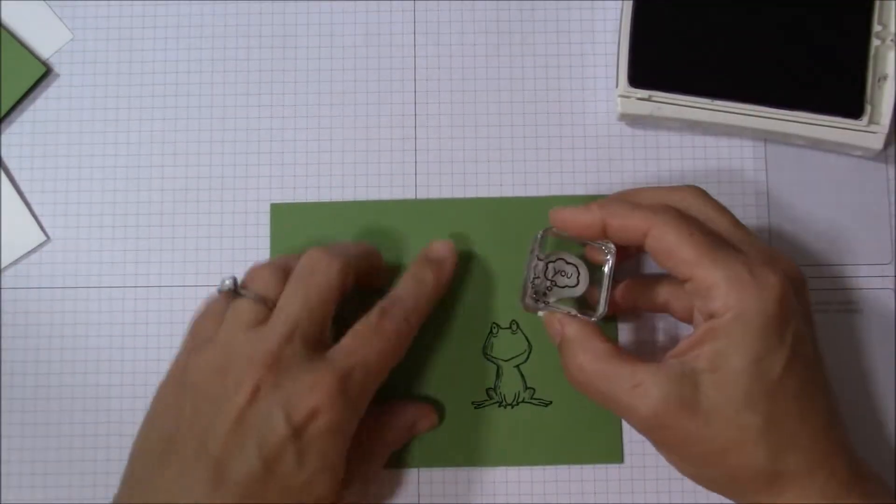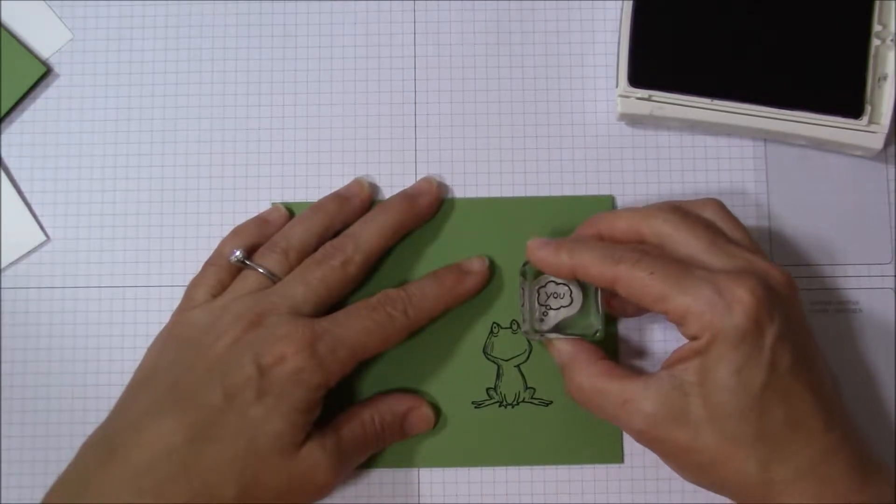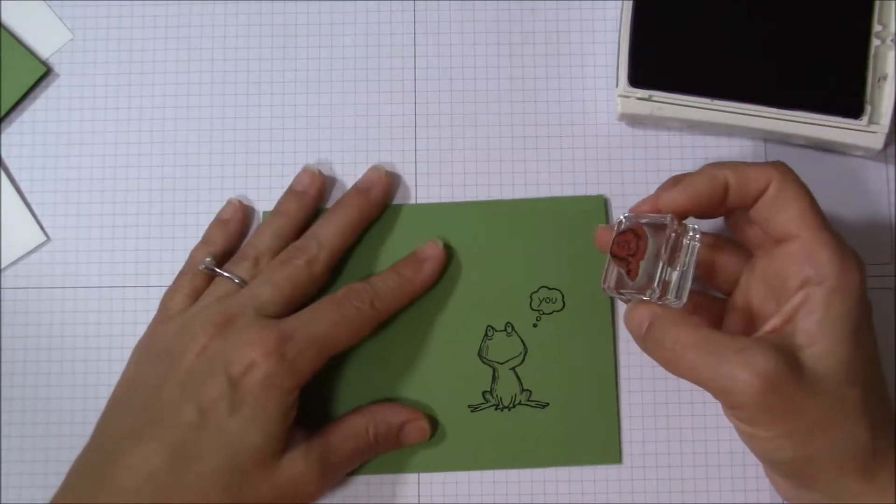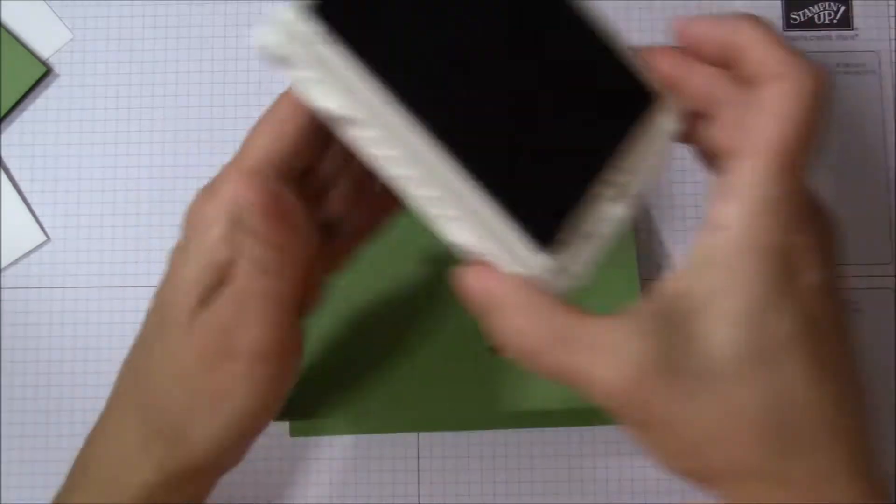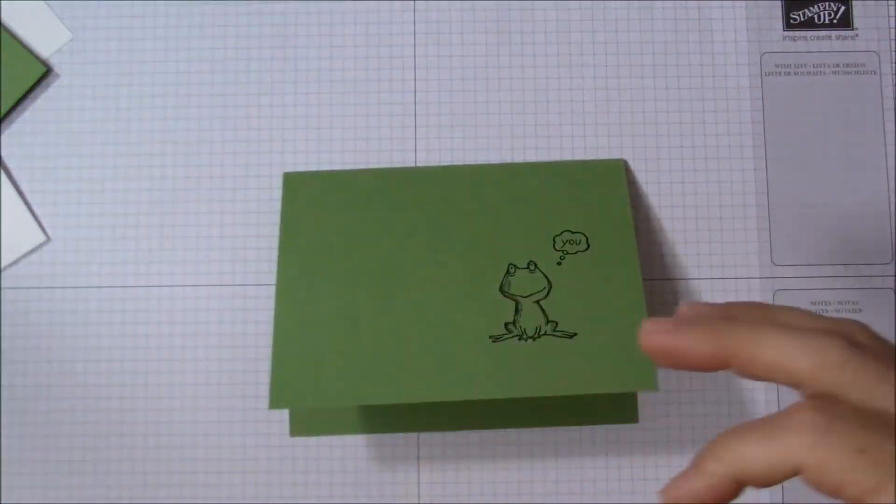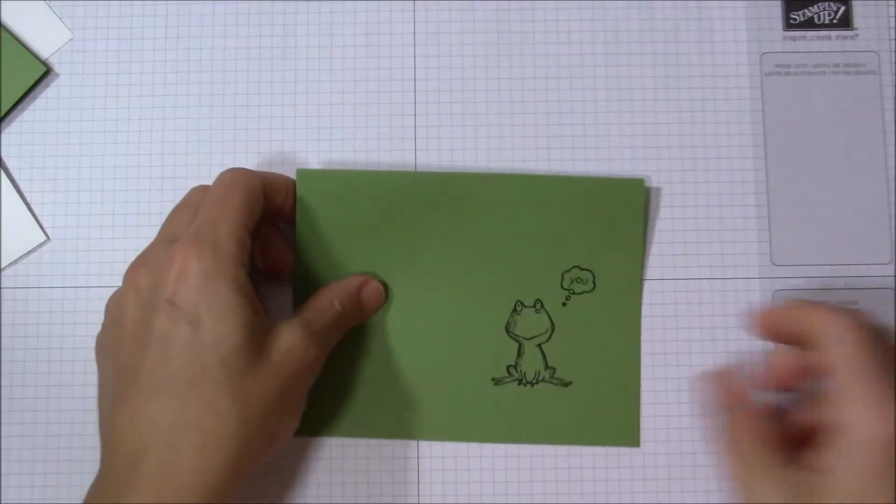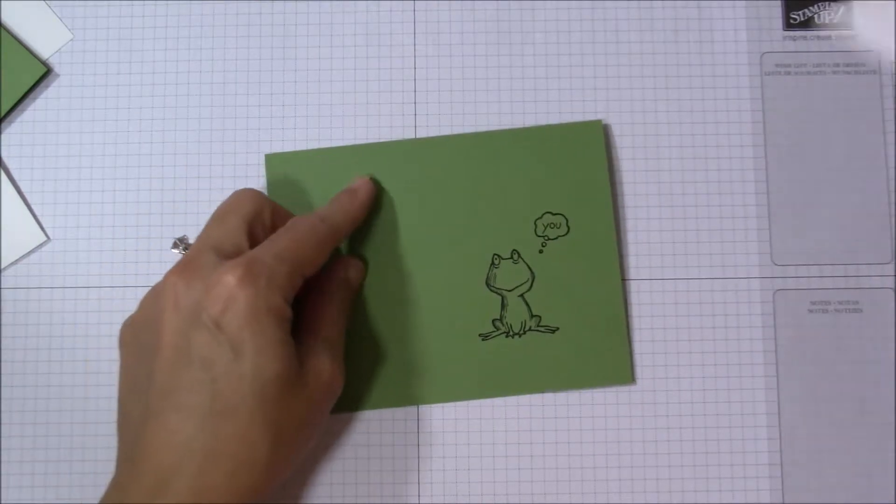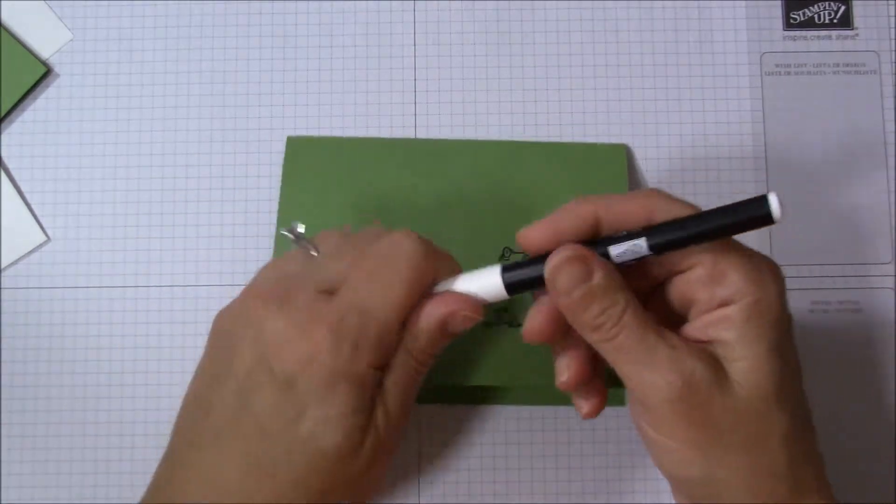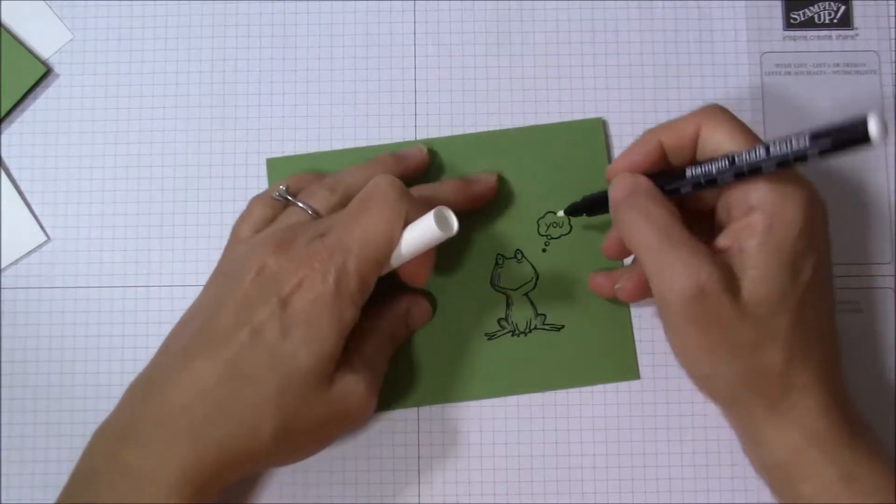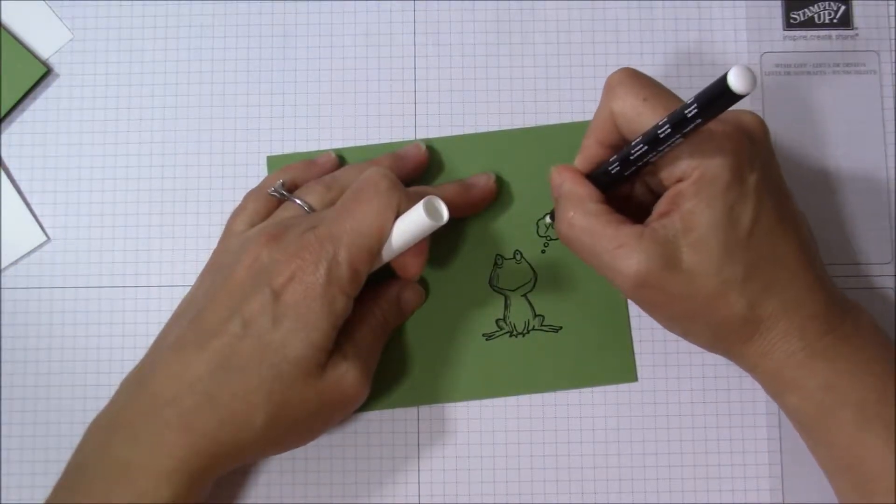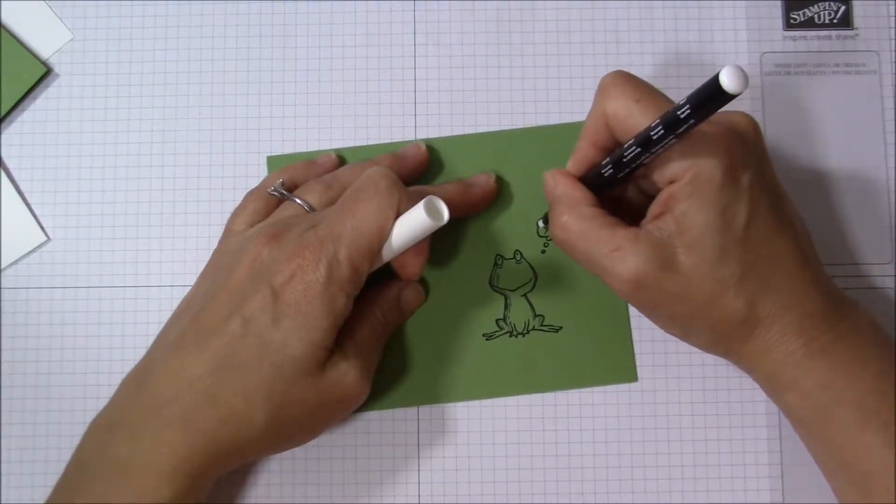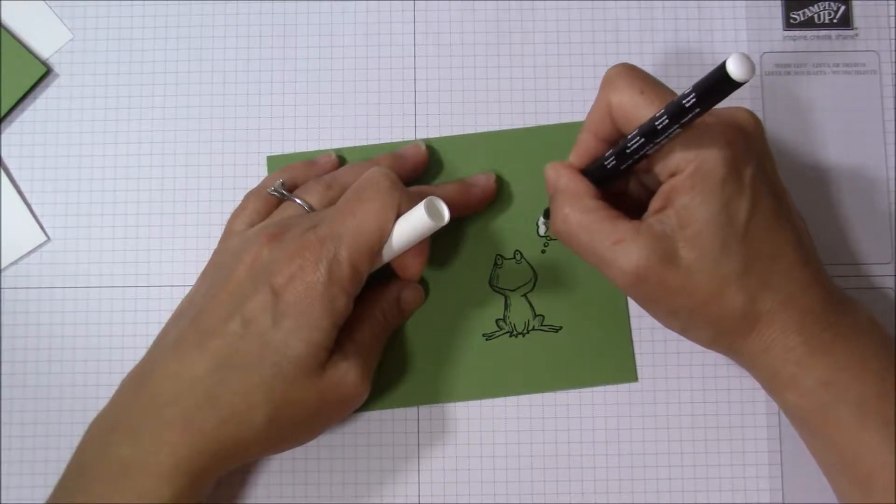And next, the 'U' so we know exactly what little froggie's thinking. All right, let's close that and now I'll just grab the chalk marker. You get two in a pack and we're just going to color in the little bubble that he's thinking of you.